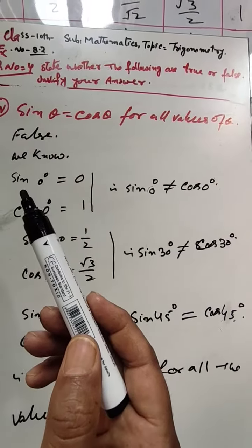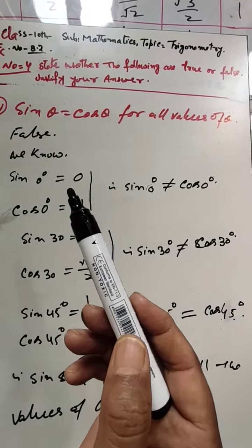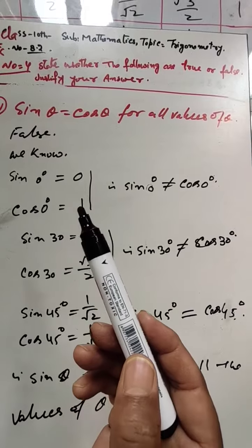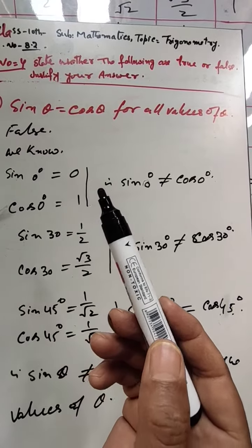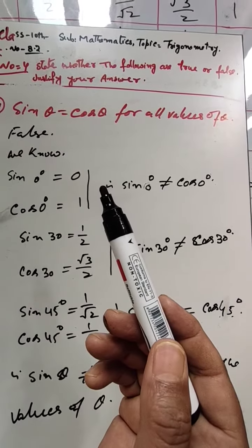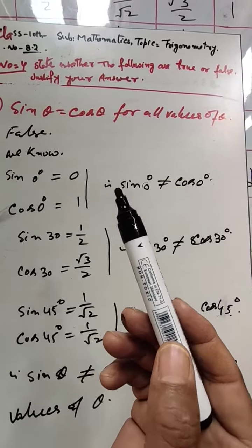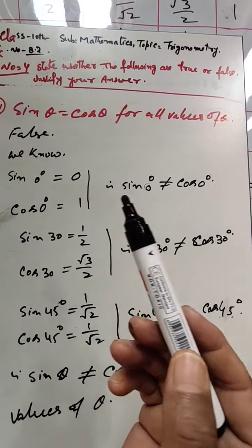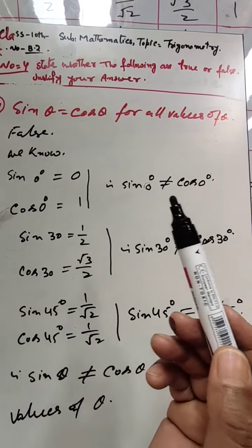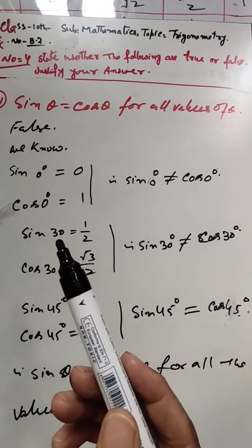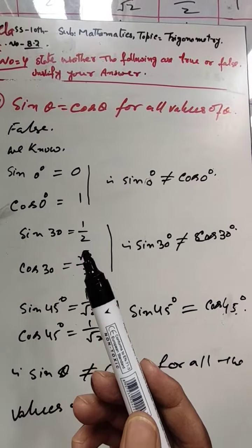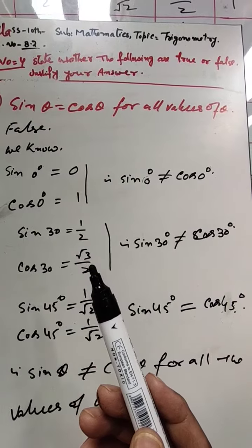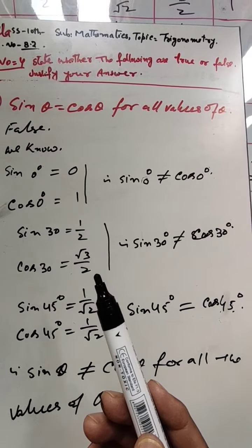We can verify from the table: sine of 0° is equal to 0 and cos of 0° is equal to 1, therefore sine of 0° is not equal to cos of 0°. Also, sine of 30° is equal to 1/2 and cos of 30° is equal to √3/2, so sine of 30° is not equal to cos of 30°.